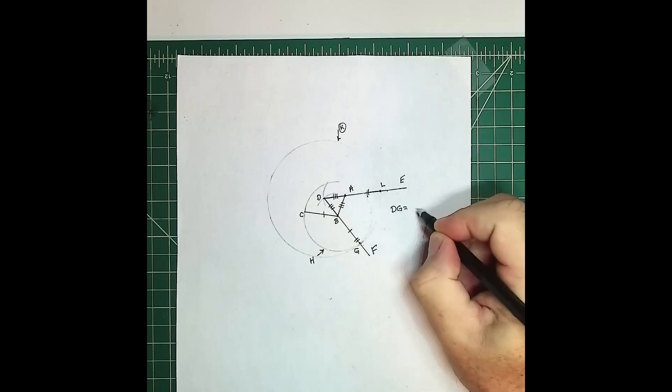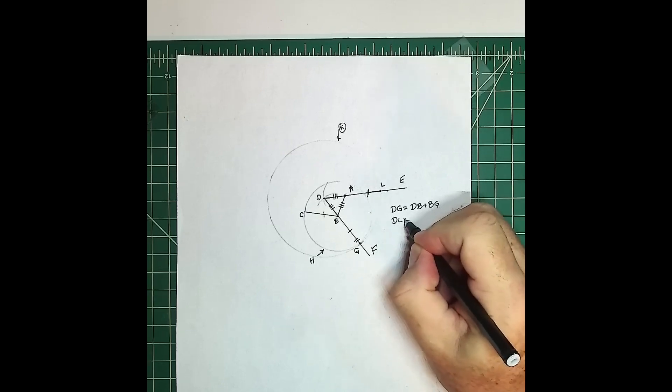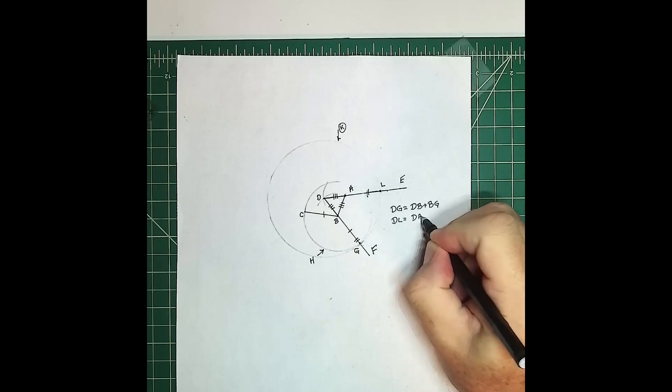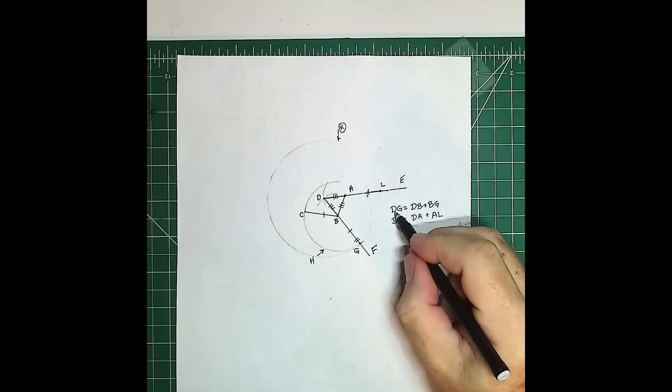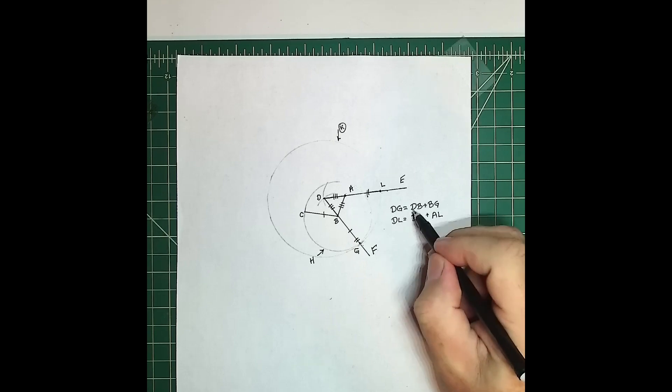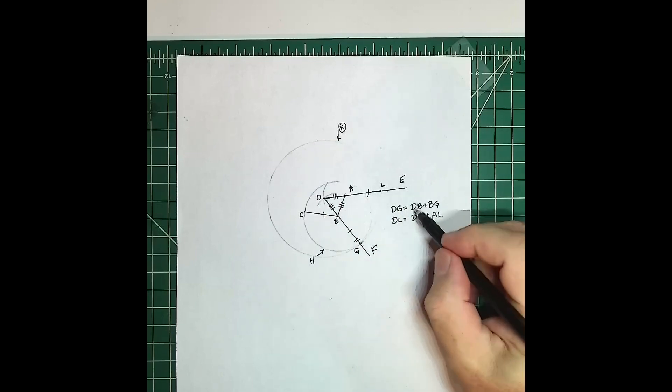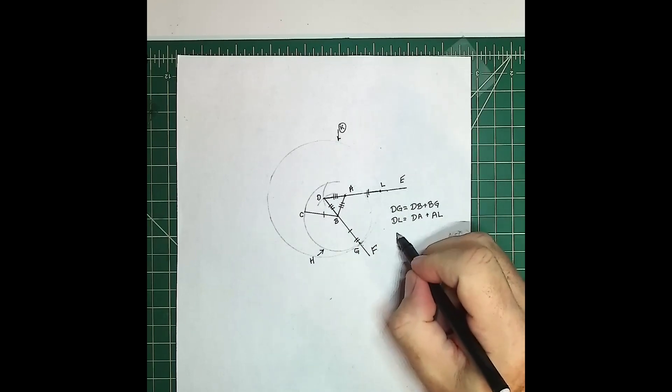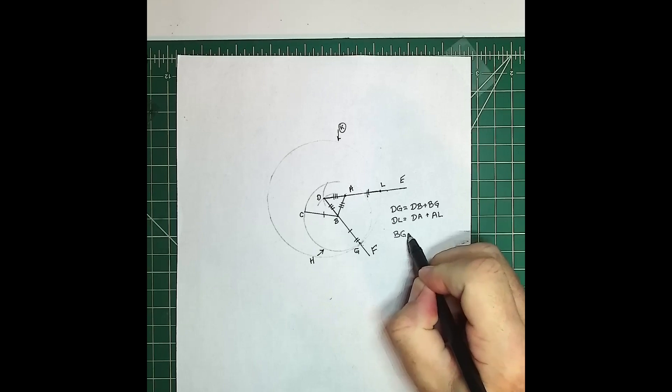If we look at the segments of DG, DG is equal to DB plus BG. And if we look at the segment DL, DL is equal to DA plus AL. So DG is equal to DL. And the parts of equals are equal to parts of equals. So what we have then is DB plus BG is equal to DA plus AL. But DB and DA are the same.